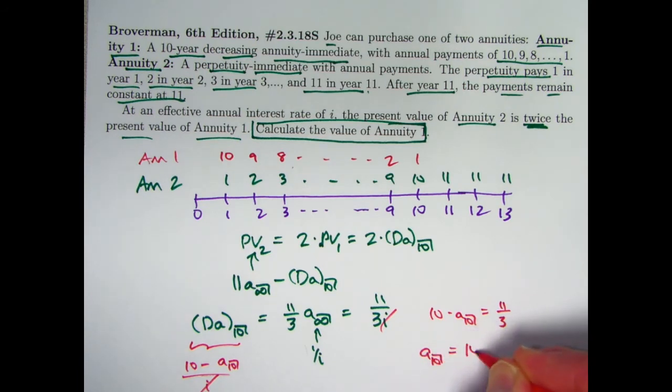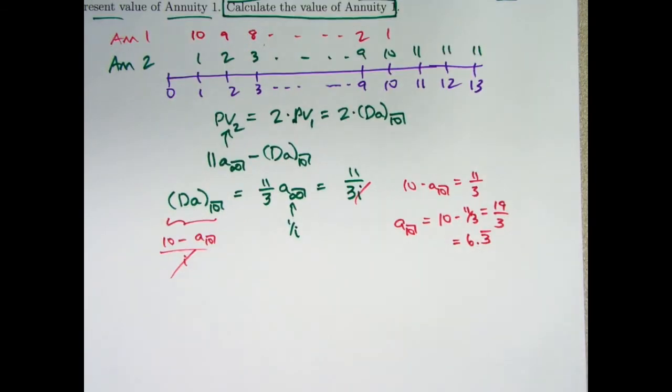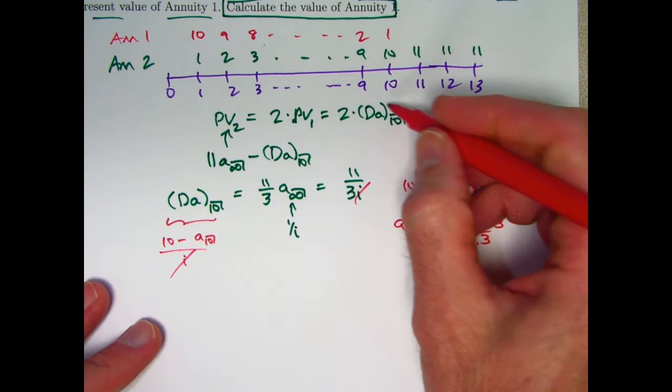A 10 is going to be 10 minus 11 thirds. 30 over 3 minus 11 over 3 is going to be 19 over 3, or 6.3 repeating if you prefer. All right, we're not done, right? We need to solve ultimately for DA 10.